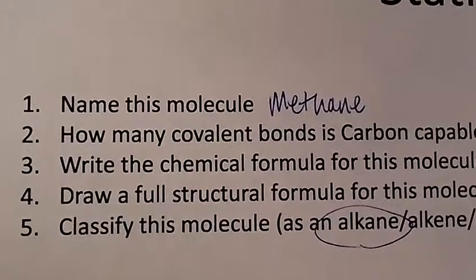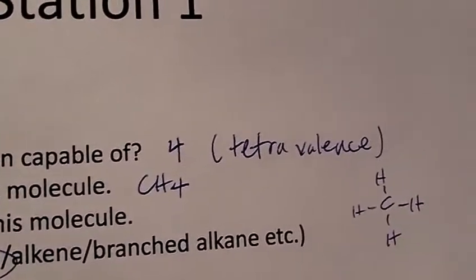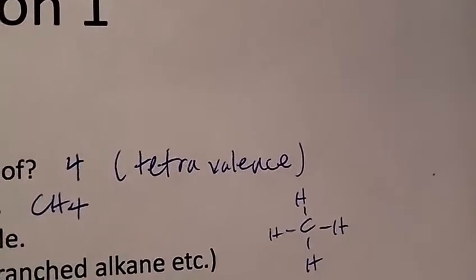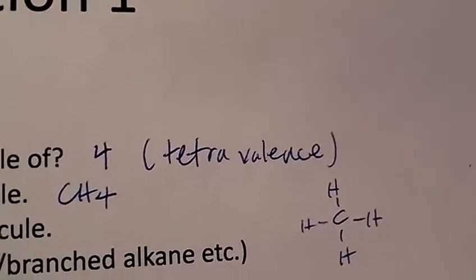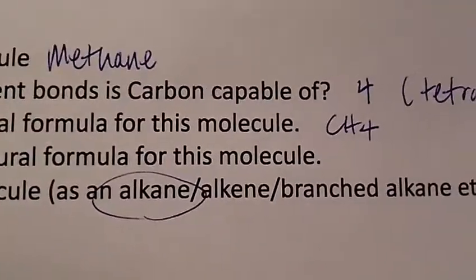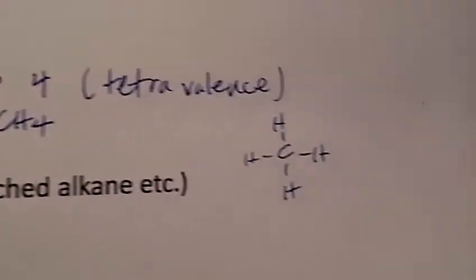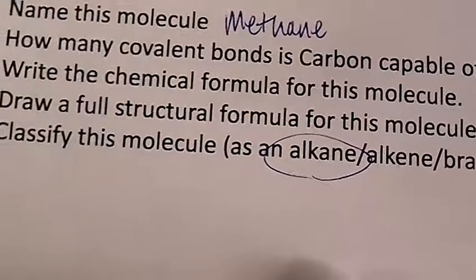This first station — this particular model has one carbon and four hydrogens. That molecule is methane. Carbon is capable of four bonds, and the name we use to describe that ability to make four bonds is tetravalence. The chemical formula for that molecule was CH4. This would be the structural formula where you have the carbon with the four hydrogens, and of course it is an alkane.